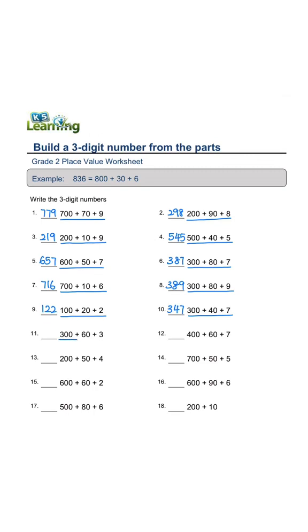300 plus 60 plus 3 equals 363. 400 plus 60 plus 7 equals 467. 200 plus 50 plus 4 equals 254.